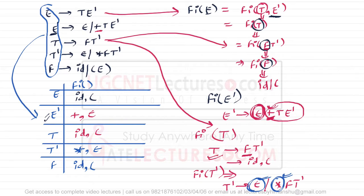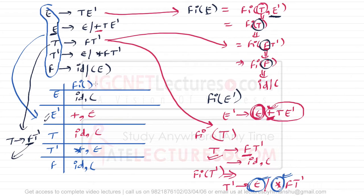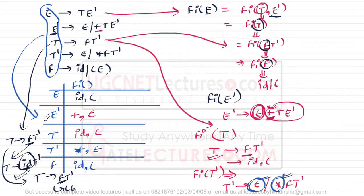In summary, when finding the FIRST of a particular variable, the idea is: if you try to generate any string starting from that variable, what is the first terminal symbol you can get? For example, T → FT'. If you replace F by id, you get id·T', where id is a terminal, so id is in FIRST(T). If you replace F by (E)T', then '(' is a terminal, so '(' is also in FIRST(T). It's a simple process — just look at what the first terminal symbol can be.